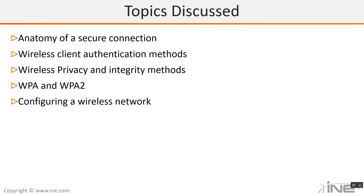As for integrity methods, we have MIC, which was part of TKIP, but there are also other things we can use for integrity — to make sure our data does not get corrupted on its way out. That's where we have EAP and TLS tunnels, so nobody can get in there and try to mess things up.